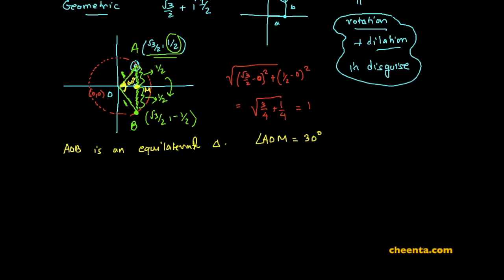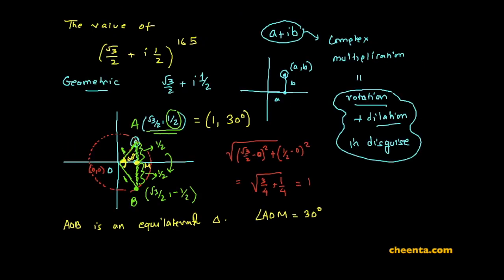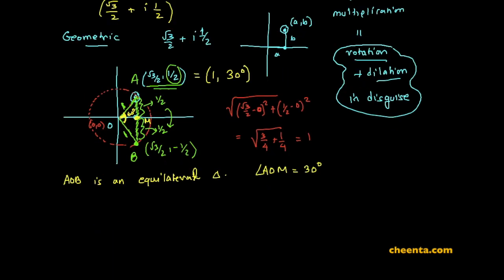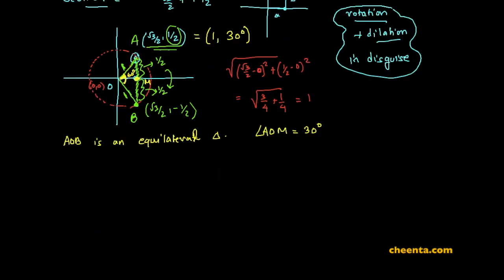If M is the midpoint of AB, then angle AOM is half of 60°, which is 30°. So point A is 1 unit away from the origin and makes an angle of 30° with the positive x-axis. Its polar coordinate is (1, 30°). That's a very important piece of information, because multiplying points in polar coordinates is super easy.